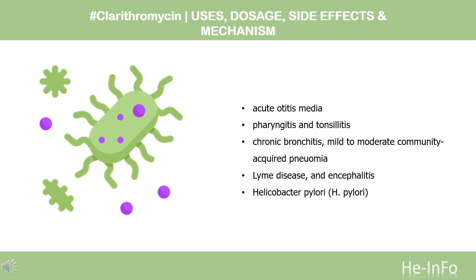Clarithromycin may also decrease the incidence of cryptosporidiosis, prevent the occurrence of alpha-hemolytic viridans group streptococcal endocarditis, as well as serve as a primary prevention for Mycobacterium avium complex (MAC) bacteremia or disseminated infections in adults, adolescents, and children with advanced HIV infection. Clarithromycin is also indicated in combination with vonoprazan and amoxicillin as co-packaged triple therapy to treat H. pylori infection in adults.